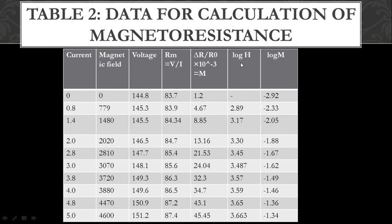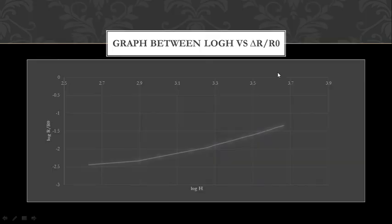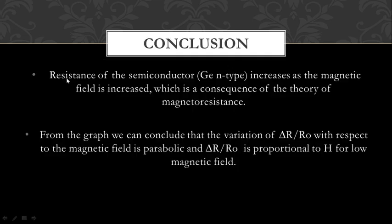The log of H and log of M are computed and a graph is plotted between them. The conclusion is that the resistance of the germanium n-type semiconductor increases as the magnetic field increases, consistent with the theory. From the graph, the variation of ΔR / R_0 with respect to the magnetic field is parabolic, and ΔR / R_0 is proportional to H for low magnetic fields.